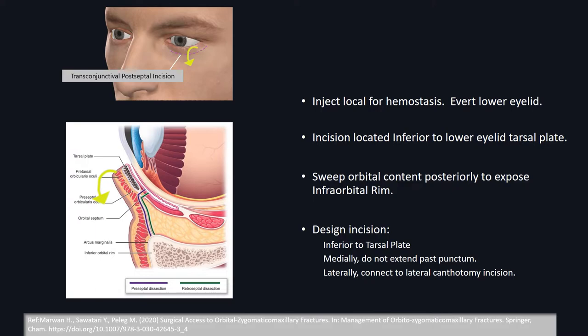For the transconjunctival incision, start by injecting local anesthetic for hemostasis while everting the lower eyelid. The incision is placed inferior to the lower eyelid tarsal plate — this is very important to avoid entropion and other complications. Before making the incision, sweep the orbital content posteriorly to expose the orbital rim. The incision must be inferior to the tarsal plate, should not extend past the punctum medially, and laterally should connect to the lateral canthotomy incision. Once you cut through the incision, palpate for bone and continue dissection until you reach the bone. Identify the subperiosteal dissection plane and sweep the orbital content back, connecting it laterally to the canthotomy if needed.